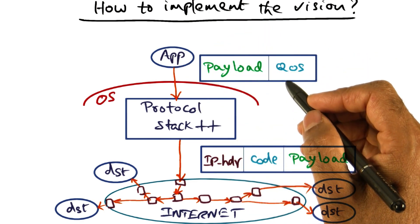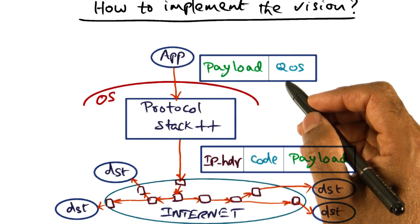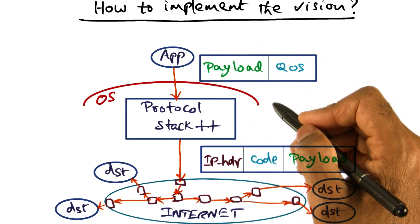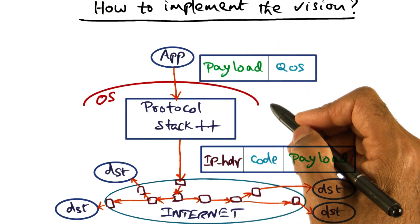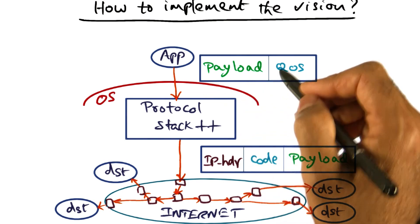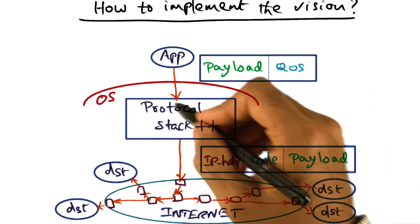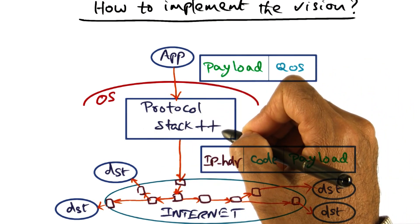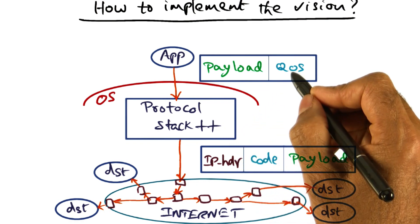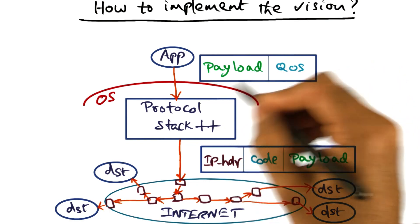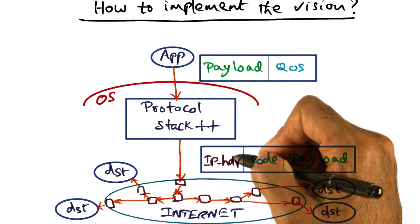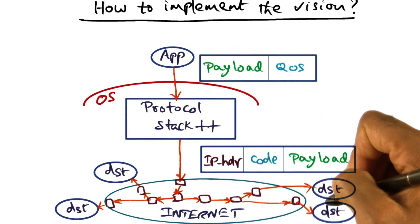These quality of service APIs could be things like: this particular network flow that I'm creating has certain real-time constraints because it has video data and so on. And those are the hints that the operating system is going to use in terms of synthesizing code that corresponds to the API that the operating system is providing you to give hints to the network.